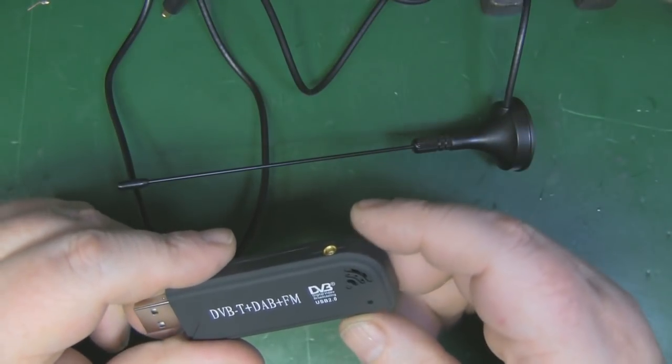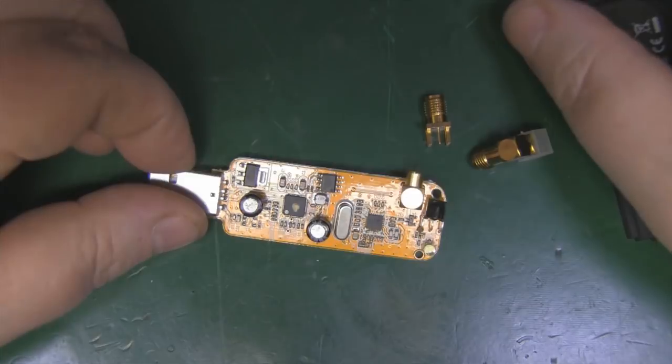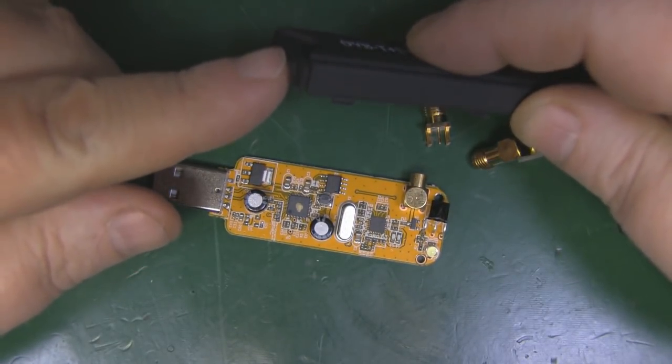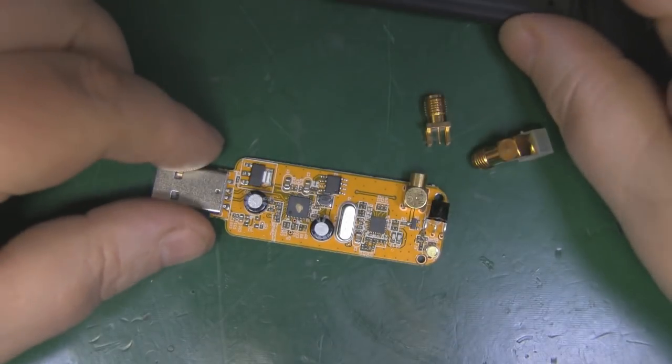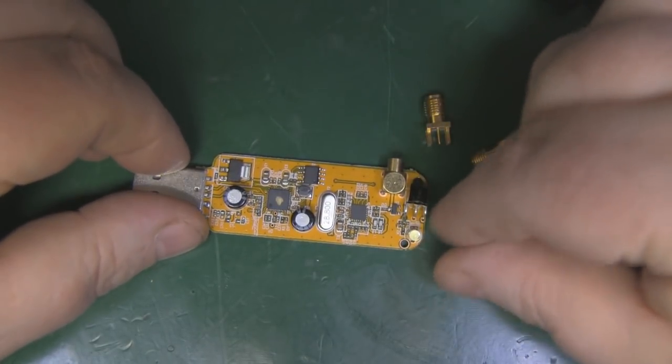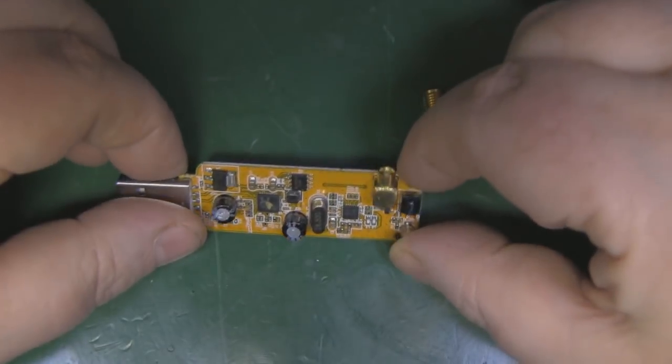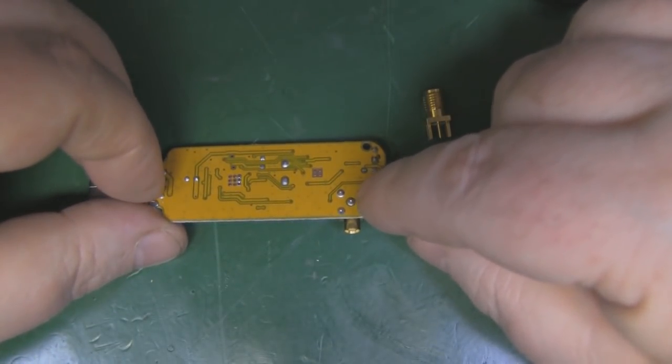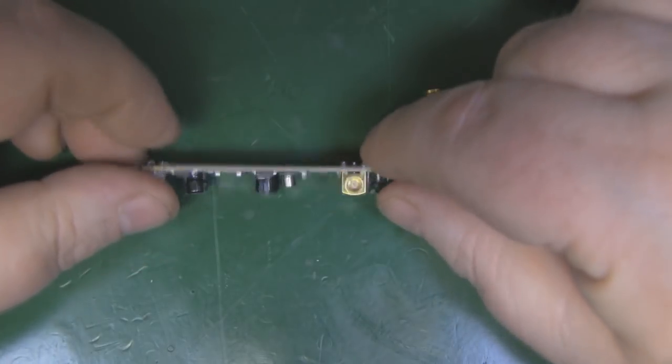You can buy them for around a fiver anyway. It's pretty simple to crack one of these open—you've just got to get in there with a flat pry tool, there's no screws or anything. Now we're looking inside here, I think it's going to be pretty simple to desolder the MCX connector off the PCB.